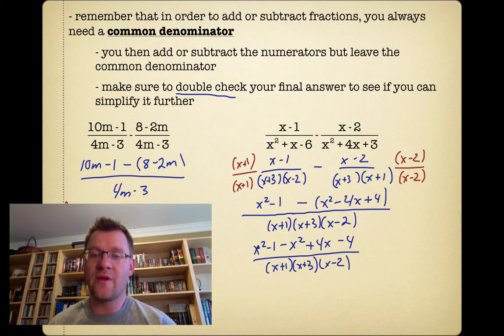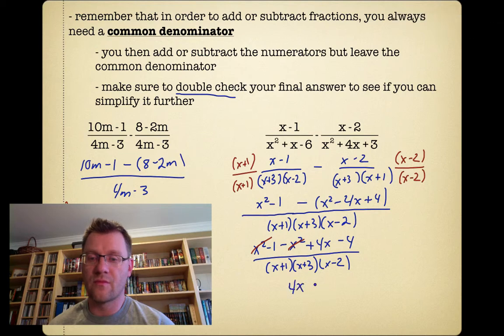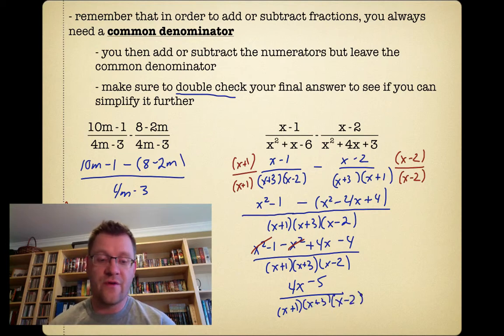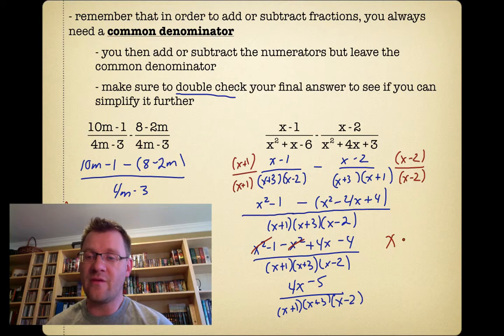And now I can combine like terms. I get x squared minus x squared, or those just cancel each other off. So I end up with 4x minus 5 on the top. And x plus 1, x plus 3, and x minus 2 on the bottom. I have forgotten to state my non-permissible values, so I can state them now.